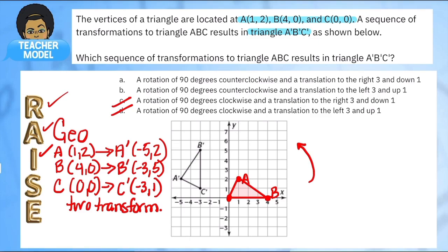So that's the first thing that I know happened. So how do I figure out the next set? How do I differentiate between did it translate three right and down one or left three and up one? So this is going to be my new challenge.